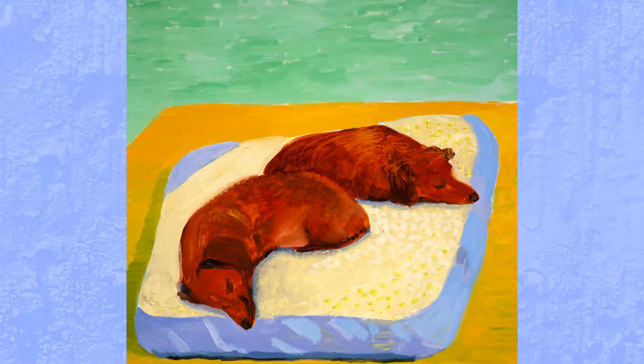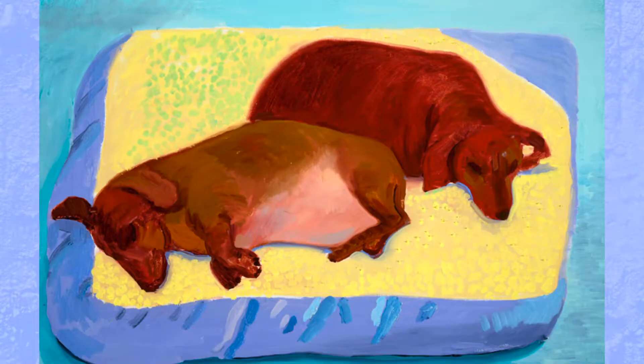David Hockney is an artist who is very inspired by his two dogs named Stanley and Bougie. He made over 40 paintings of his dogs in just two years. These dogs are called dachshunds, and they seem to love to sleep and cuddle.